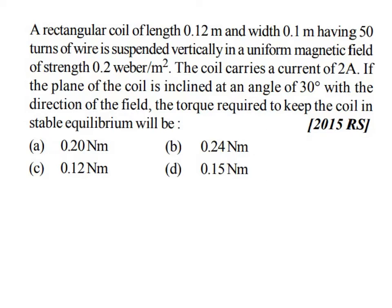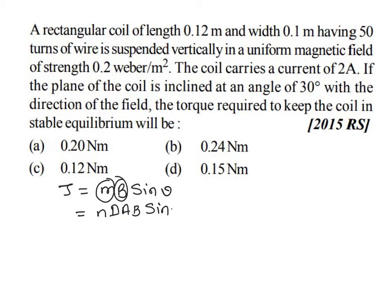As you know, the torque τ is equal to M into B into sin θ, where θ is the angle between the magnetic dipole moment and the magnetic field. The magnetic moment M is nothing but N into I into A, so the formula becomes τ = N·I·A·B·sin θ.